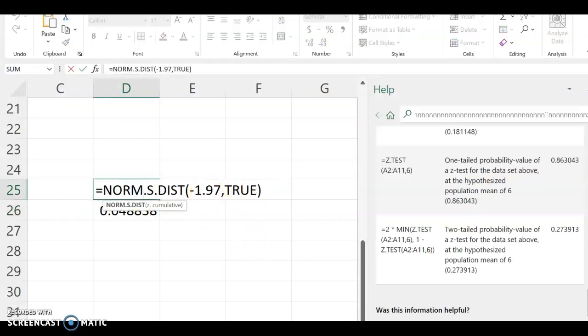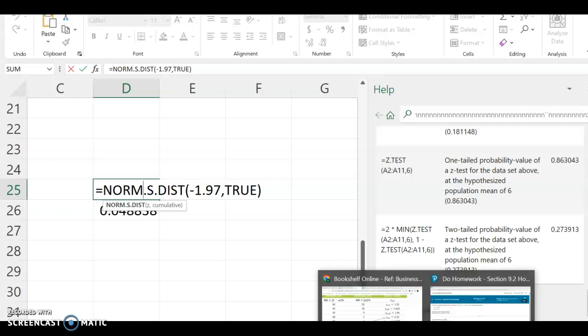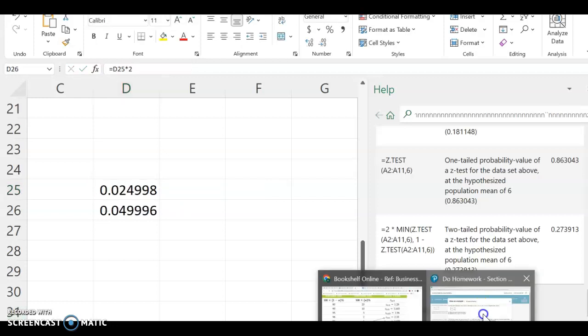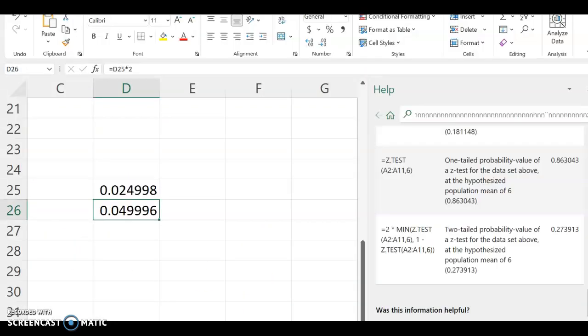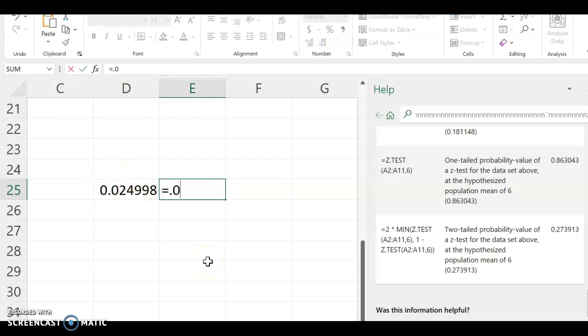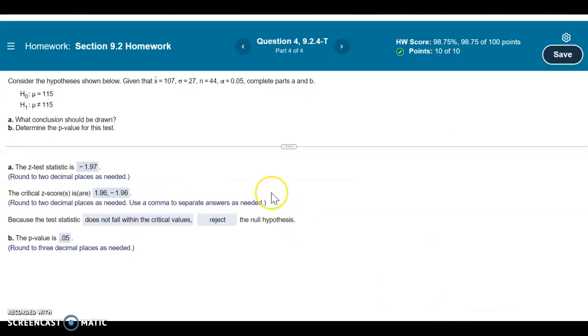Negative 1.97. So for this last part, just to clarify, it says round to three decimal places as needed. So what you should do is take the one tail p-value and round it to three. So 0.0, that would round to 0.025, then times it by two, and then you would get the p-value of 0.05.